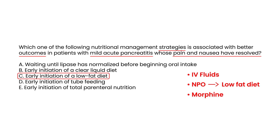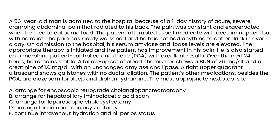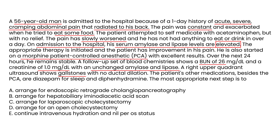Clinical vignette three: A 56-year-old man is admitted for one day of acute severe cramping abdominal pain radiating to his back. Pain was constant and worsened when he tried to eat. Acetaminophen gave no relief. On admission, serum amylase and lipase are elevated. Appropriate therapy is initiated, pain improves, and he is started on morphine with excellent results. Over 24 hours he remains stable. Follow-up labs show BUN 26, creatinine 1, and unchanged amylase and lipase. Ultrasound shows gallstones with no ductal dilation. His other medications are diazepam and diphenhydramine. What is the most appropriate next step?